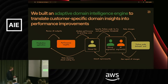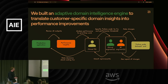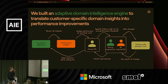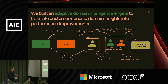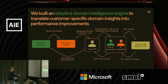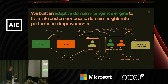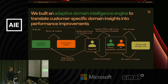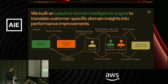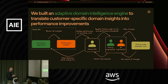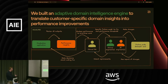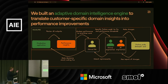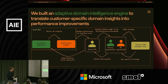So how do we do that? We call this our adaptive domain intelligence engine. What it does is take customer-specific domain insights and convert them into performance improvements, building a system around that. There are broadly two main parts: the measurement side — how is our current pipeline doing — and then the improvement side. I'll talk first about measurement in more detail, and then about improvement.